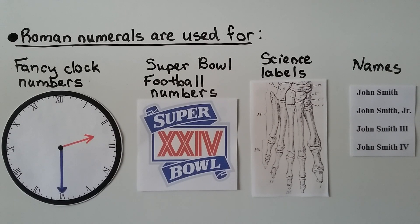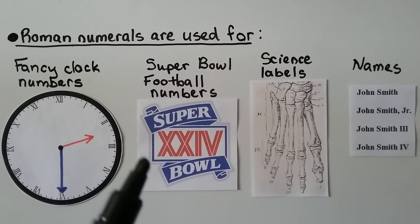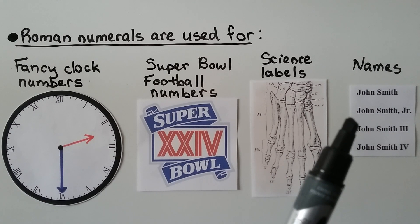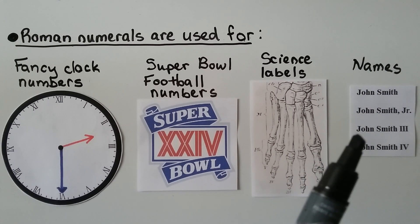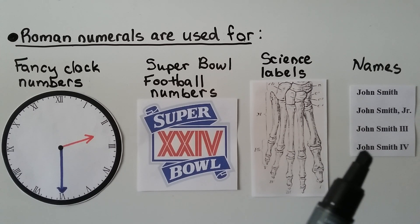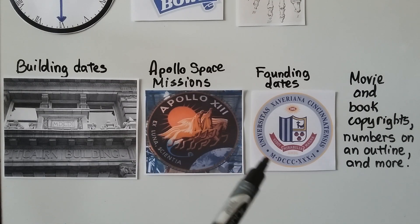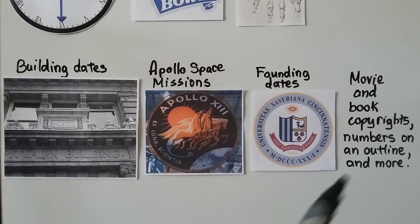Roman numerals are used for many things. They're used as fancy clock numbers, for Super Bowl football numbers, for science labels — you can see the toe bones listed as Roman numerals. They're listed for names, like John Smith III or John Smith IV. You might see Roman numerals carved into a building showing the building date, used for Apollo space missions like Apollo 13, founding dates of clubs or organizations, and movie and book copyrights, as well as numbers on an outline and more.